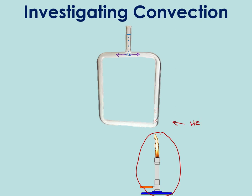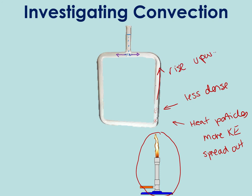That means they're going to get less dense, and that is going to mean that they rise upwards. If they rise upwards, there's going to be a gap down here. So what's going to happen is the cool particles with a high density are going to take their place.